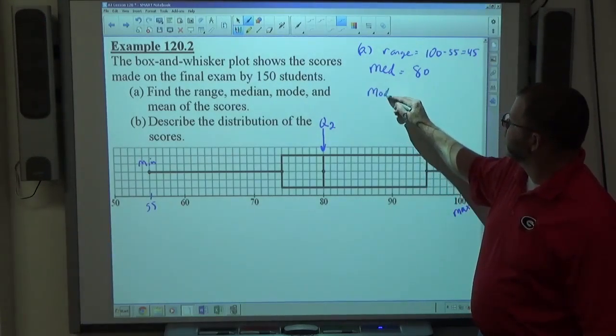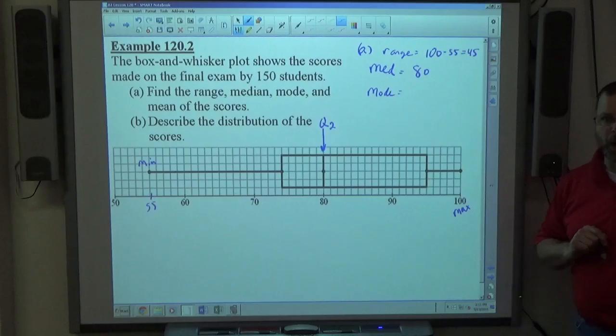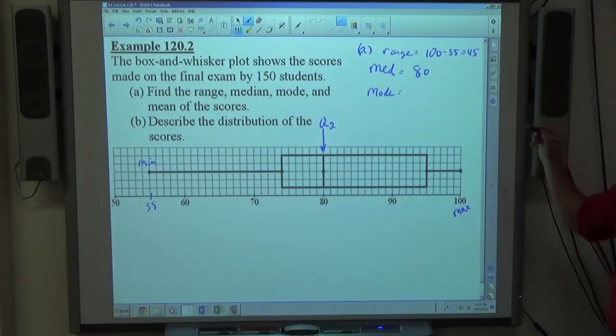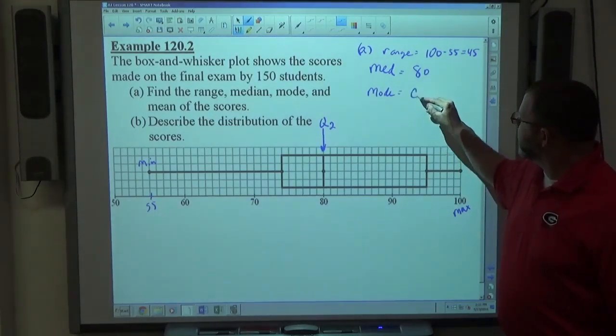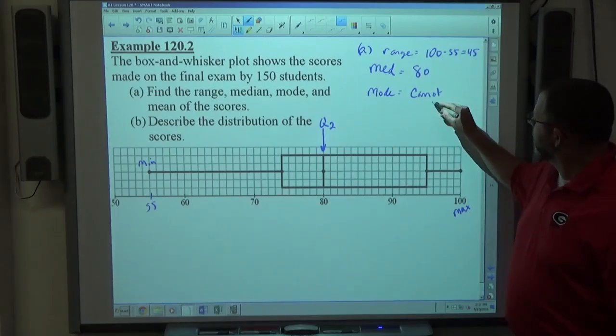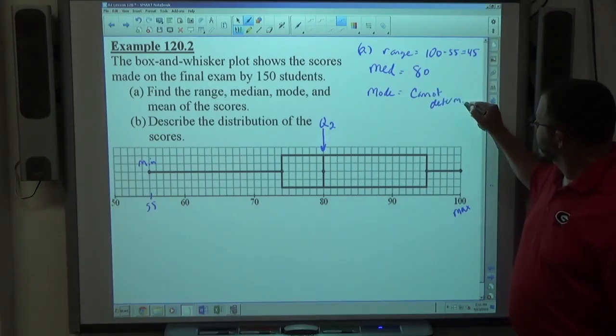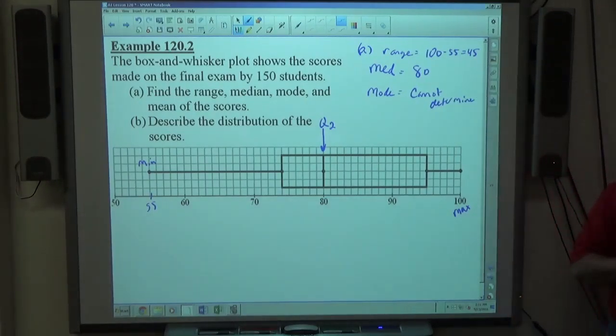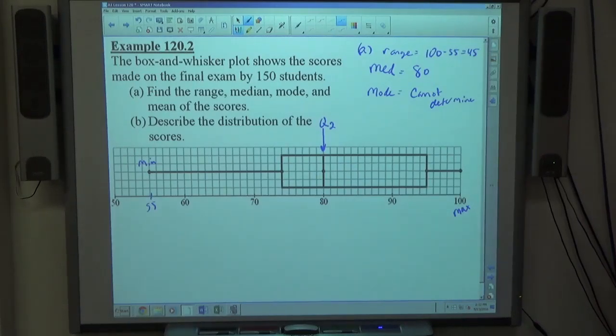How about the mode? Anybody know what score happens the most? Don't know. Cannot determine. You can't determine the most frequently made score because we don't know the actual scores. Even though Q2 is 80, 80 didn't have to be made either. Maybe 79 and 81 were made, so 80 is the halfway point.